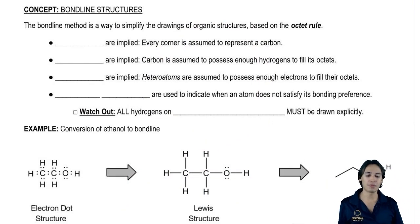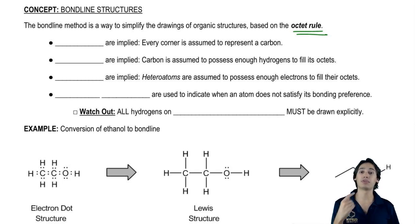The bond line method is a way to simplify drawings of organic molecules based on the octet rule. As long as you have a good understanding of the octet rule, you should be fine. You should do very well at being able to convert drawings into bond line. It turns out that in order to save time, we're going to be implying a lot of different types of information that you can derive from the octet rule.